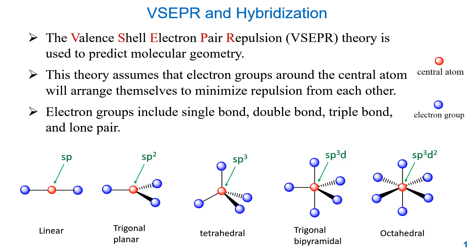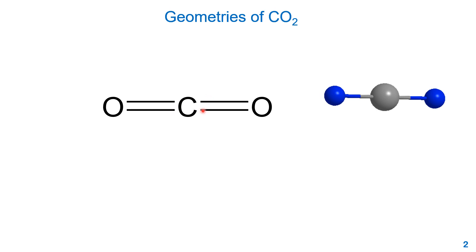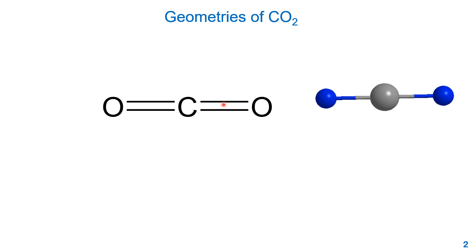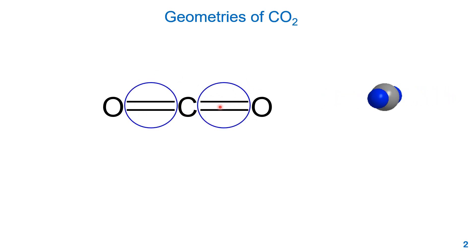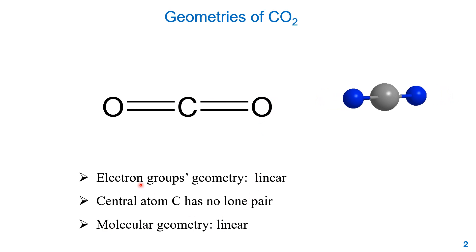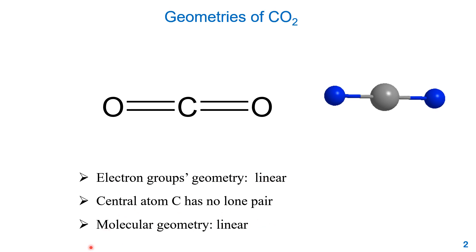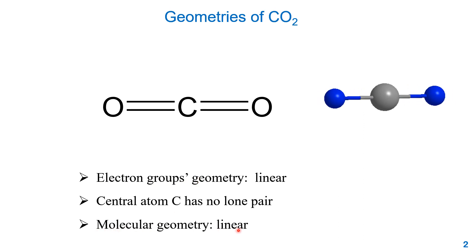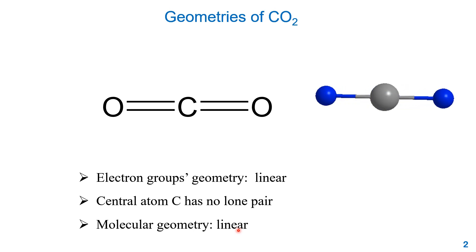Let's look at examples one by one. Carbon dioxide has a linear geometry because the central atom carbon has two electron groups, giving a linear electron group geometry. Since there is no lone pair on the central atom, the molecular geometry is the same as the electron group geometry — also linear. Electron group geometry and molecular geometry can be the same when there's no lone pair, but different when there is a lone pair.